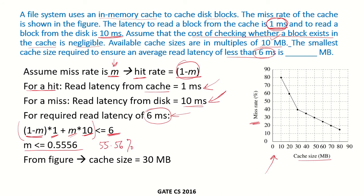Looking at the figure, 55.56% would be located at a certain point, and we know the miss rate has to be less than this. So the smallest cache size that achieves a miss rate below this threshold corresponds to 30 megabytes. Therefore, the smallest cache size required is 30 MB.